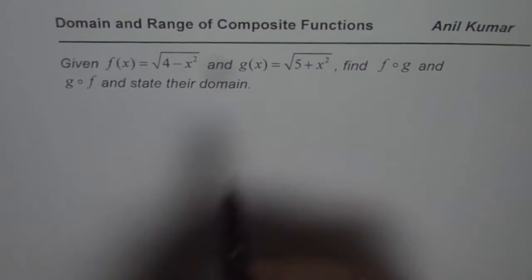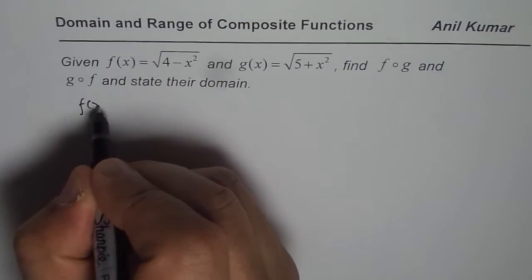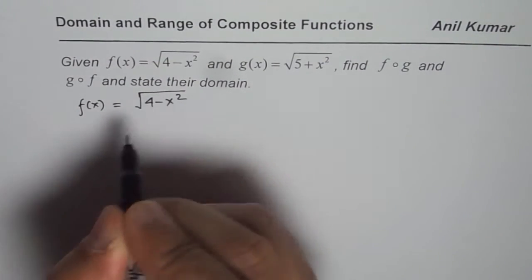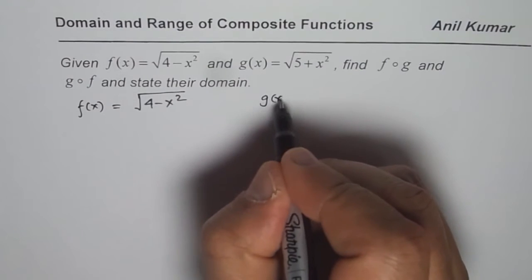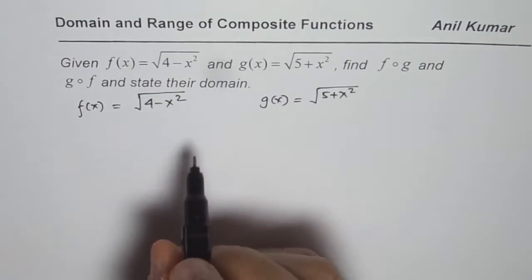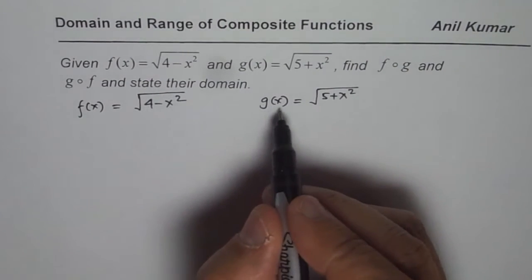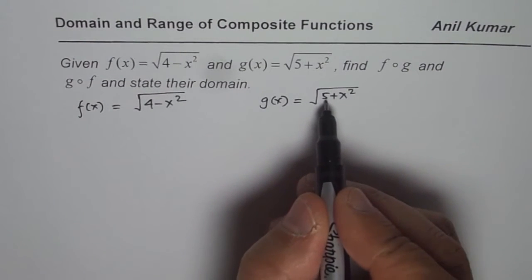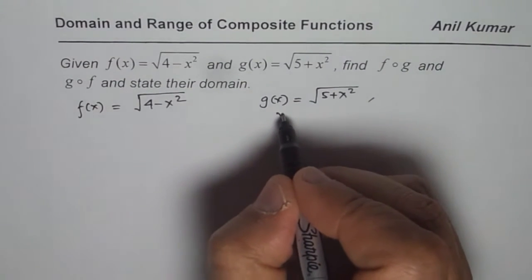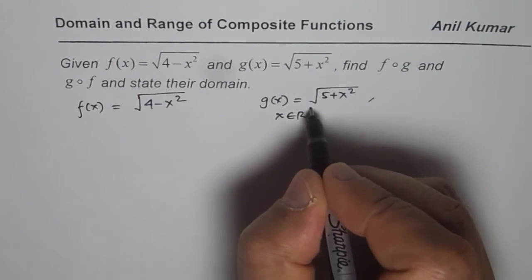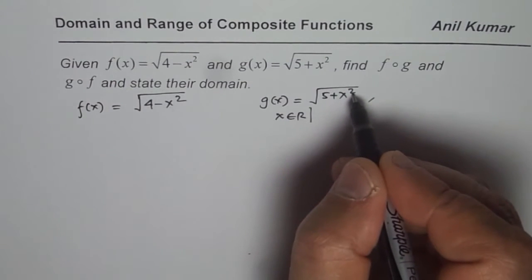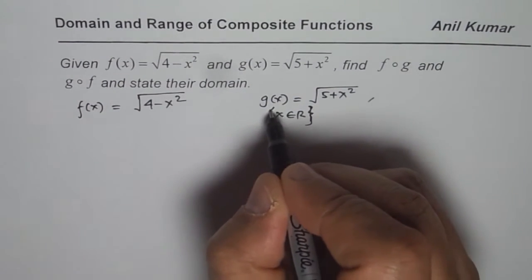We are given two functions. One is f(x) equals square root of (4 minus x squared), and the other is g(x) equals square root of (5 plus x squared). Let us first analyze the domain of these functions. For g(x), x could be any value — x squared is always positive, so g(x) has no restriction and x belongs to all real numbers.